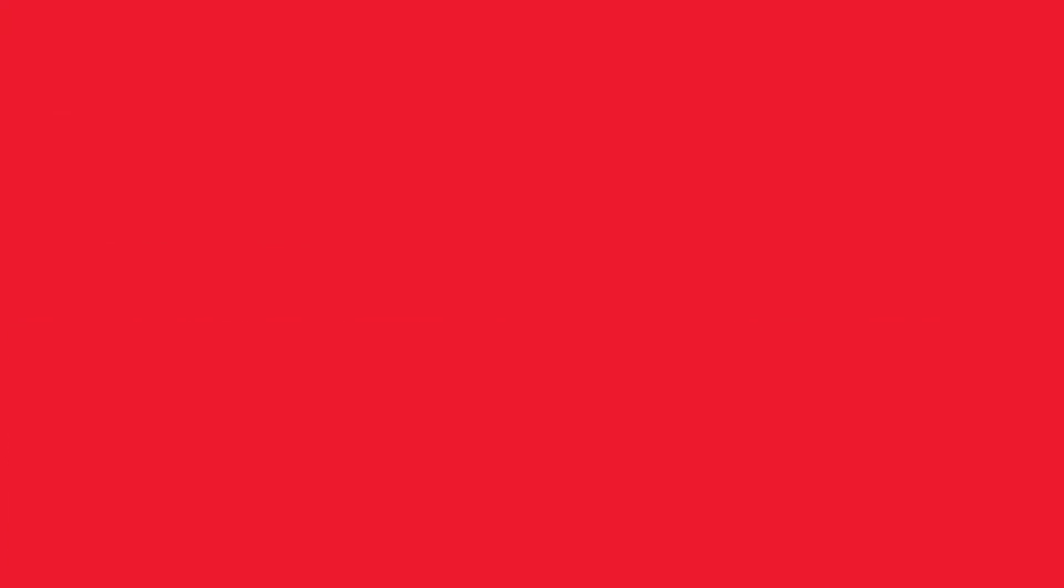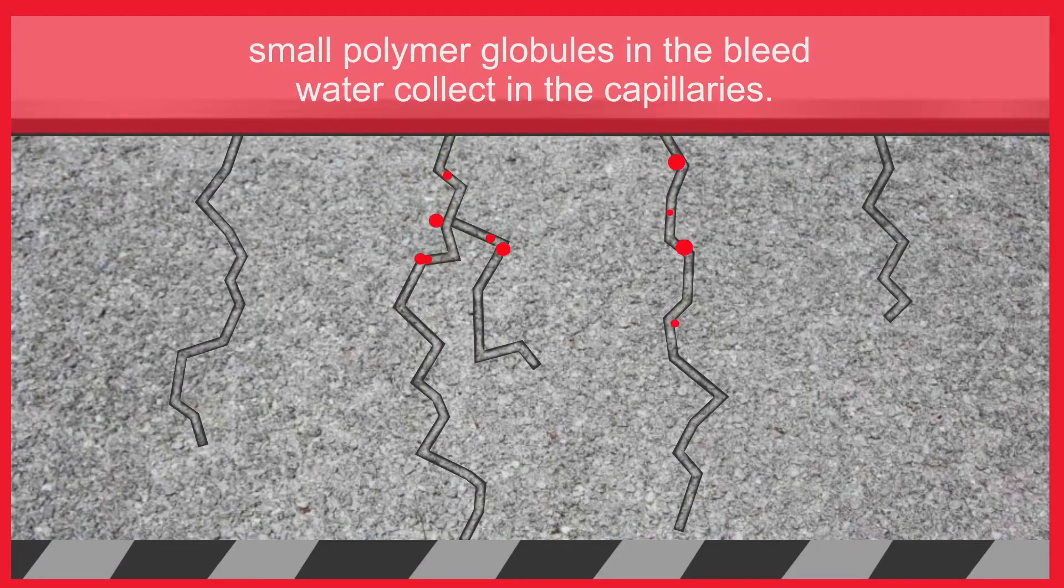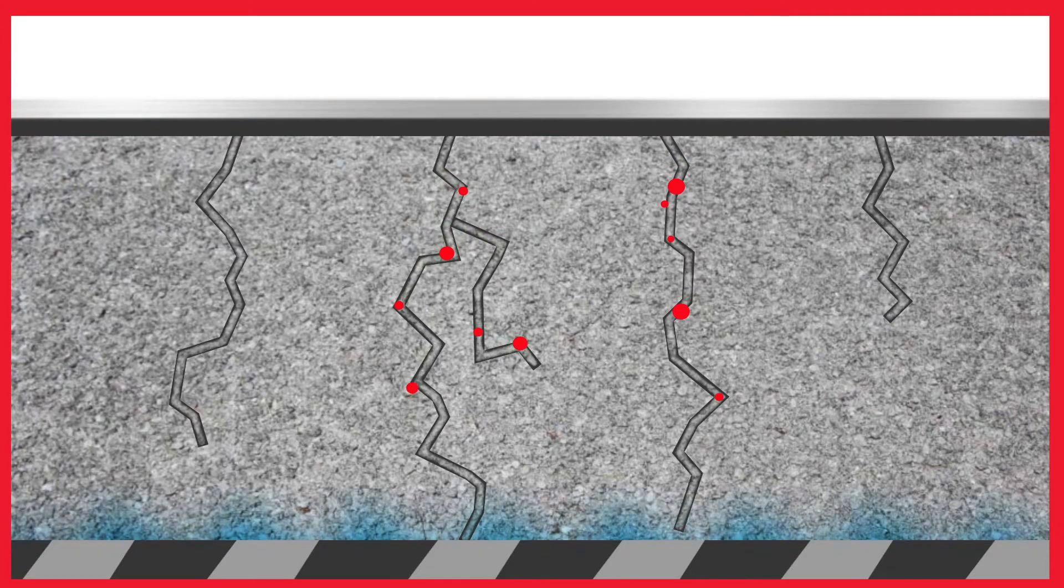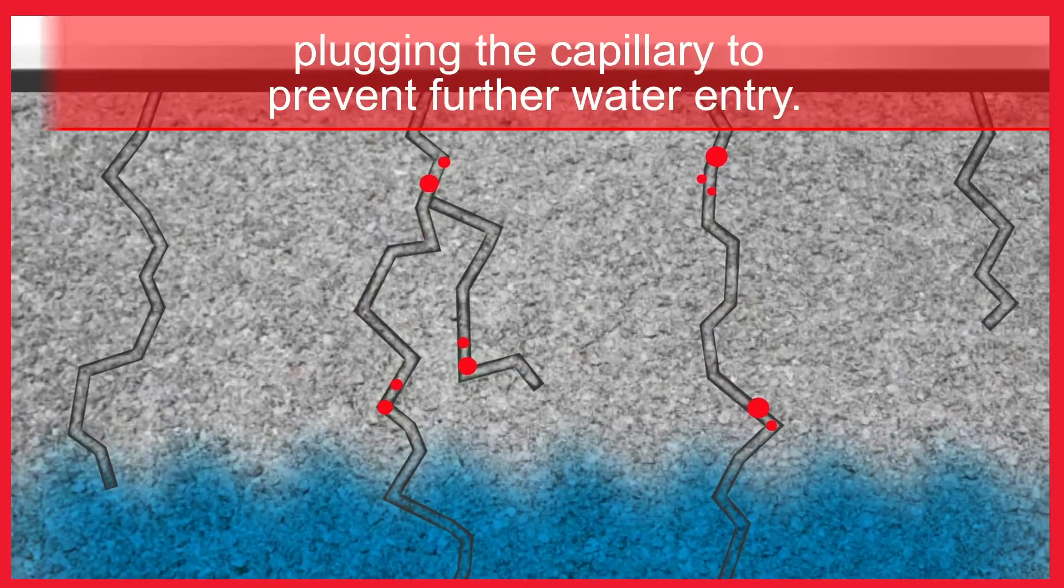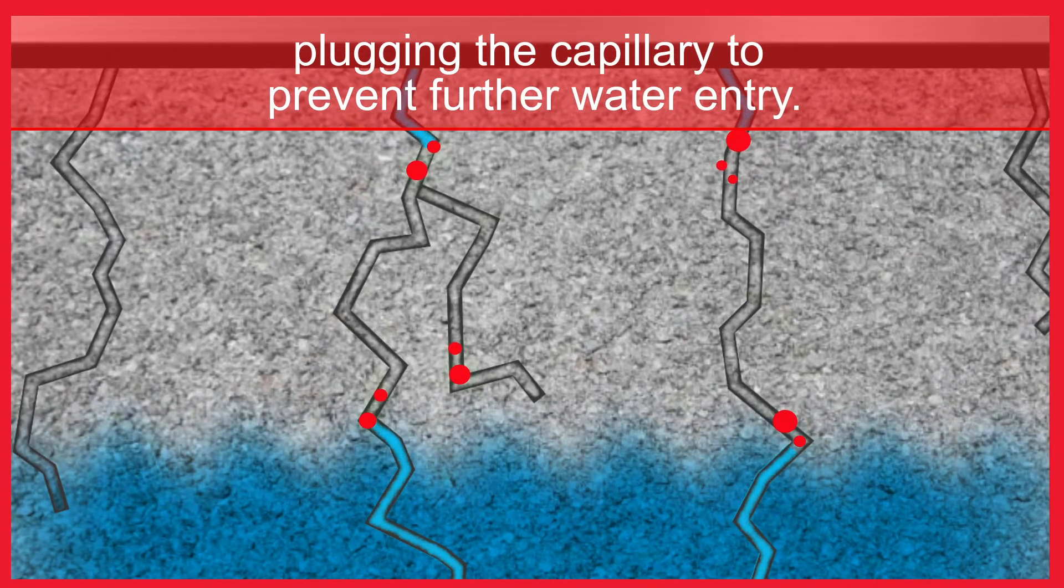Next, small polymer globules in the bleed water collect in the capillaries. Water pressure on the hardened concrete causes the globules to merge, effectively plugging the capillary to prevent further water entry.